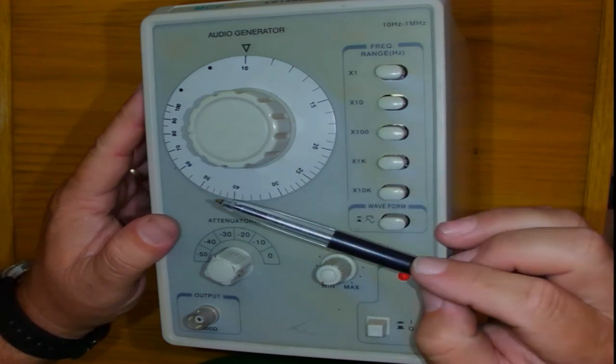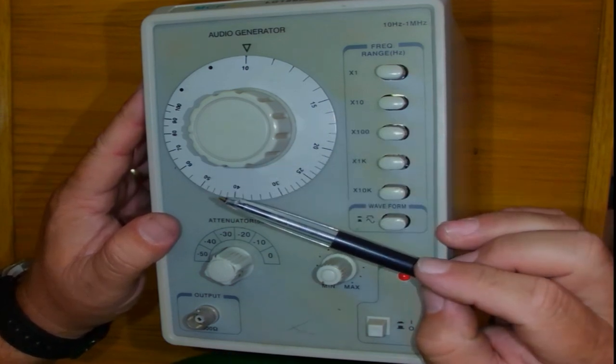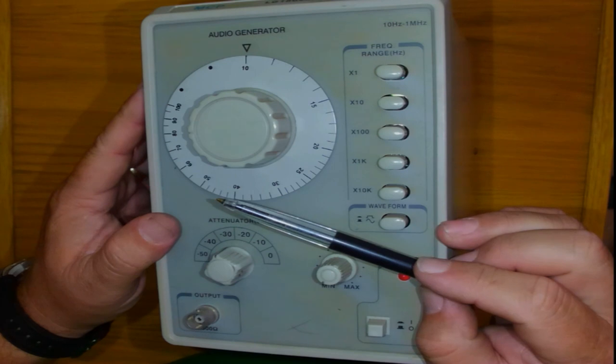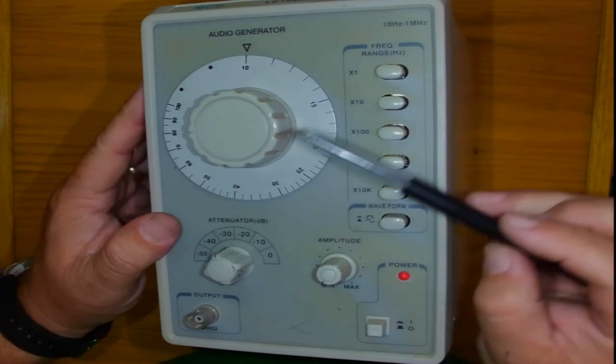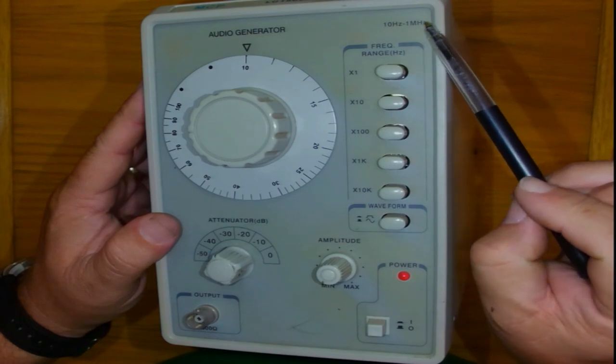Generally frequencies between zero hertz and up to about 20 kilohertz if you are listening to CD music. But you will notice that this instrument can go up to one megahertz.